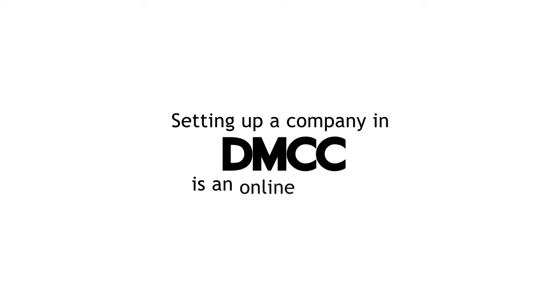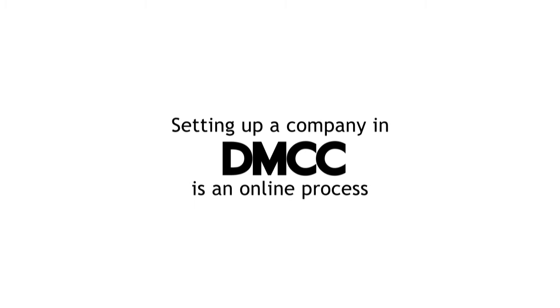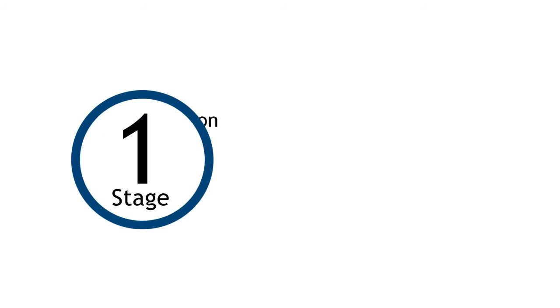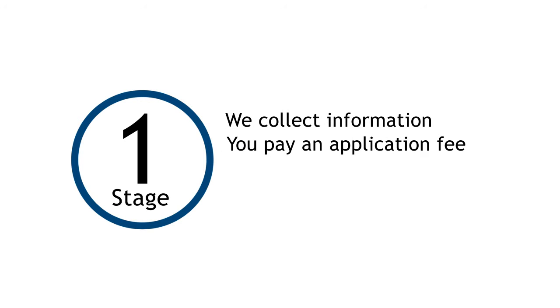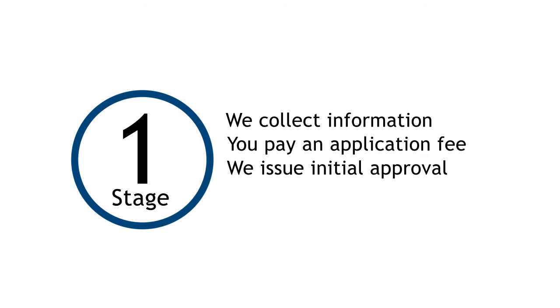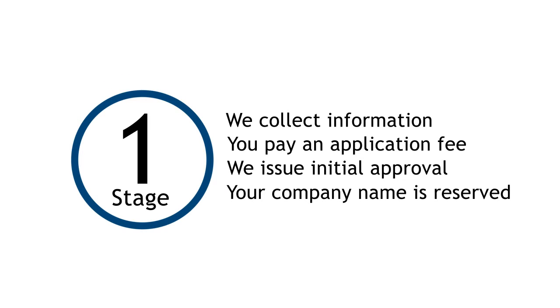Setting up a company in DMCC is an online process. In Stage 1, we will collect information about your new company. You will pay an application fee and we will issue an initial approval after reviewing your application. Your company name is reserved at this stage.